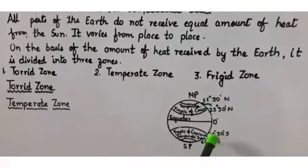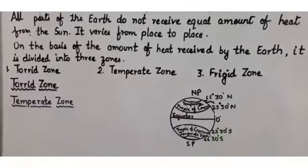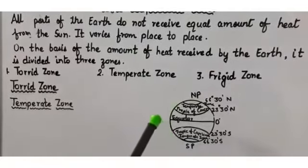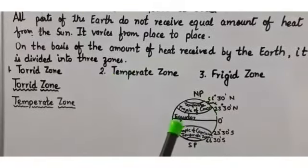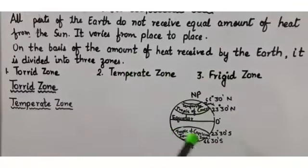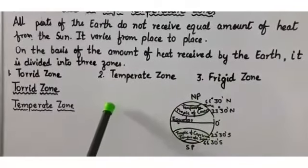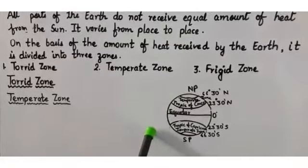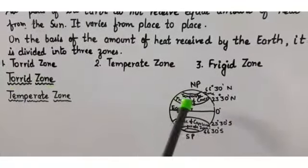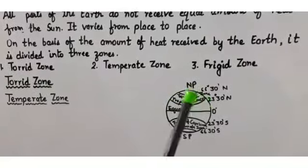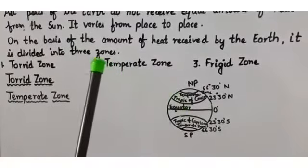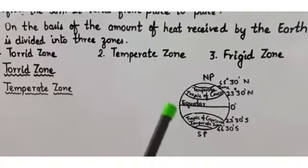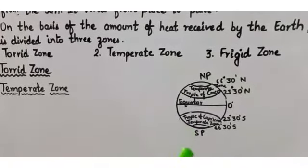The temperate zone lies between 23 degrees 30 minutes and 66 degrees 30 minutes — both north and south. This region is not at the pole, so it has moderate climatic conditions — average rainfall, and both warm and cool temperatures. The temperate zone receives slanting rays of the sun. There are four seasons in the temperate zones: spring, summer, autumn, and winter.